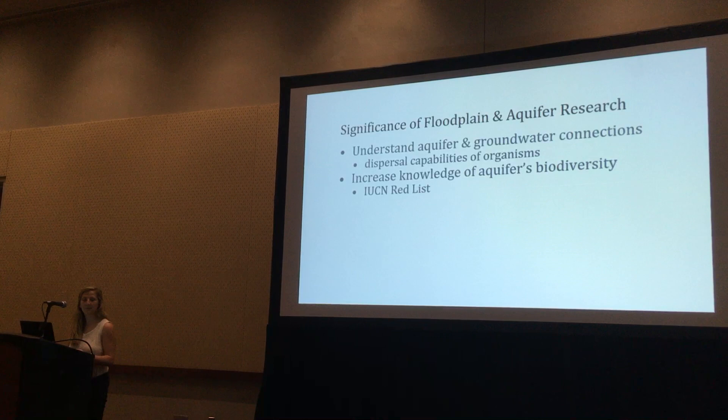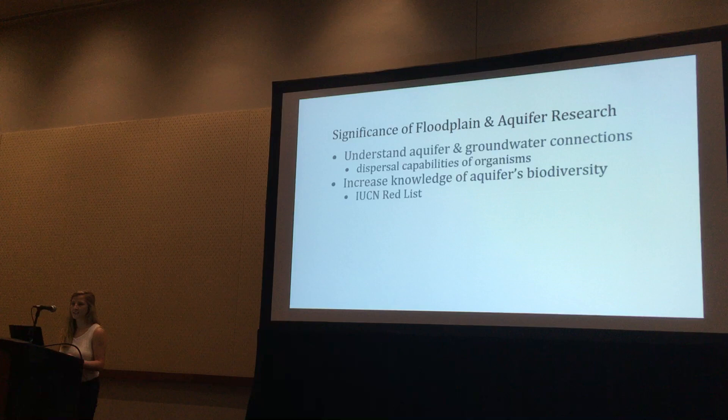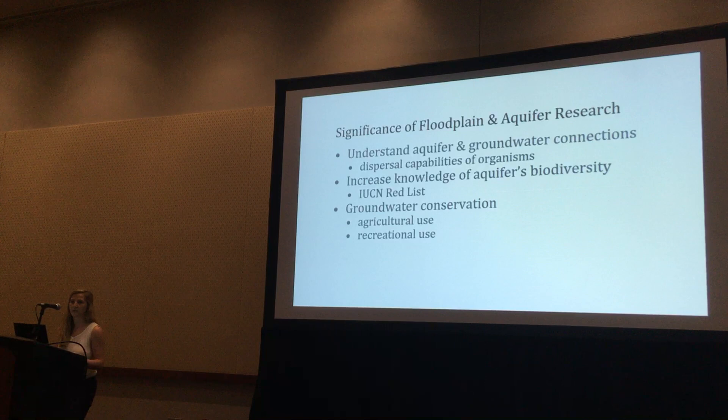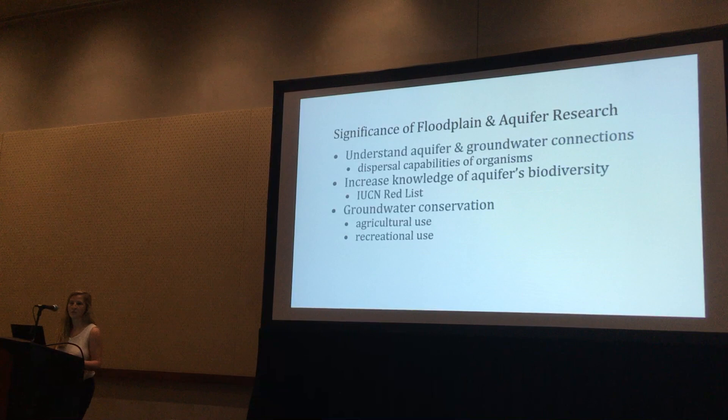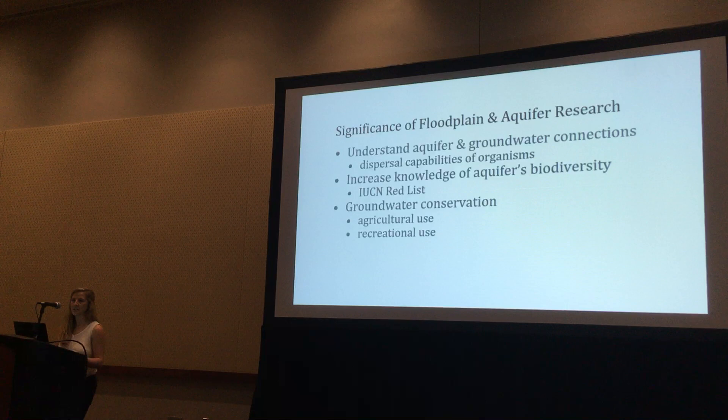Learning more about what populations may be at risk can allow us to add them to lists such as the IUCN Red List if they are endangered. It also allows us to talk about groundwater conservation areas, especially in the Northwest and West in general, where there's high use both agriculturally and recreationally of the river and the aquifer. We need to conserve these spaces, especially if they are high in biodiversity.